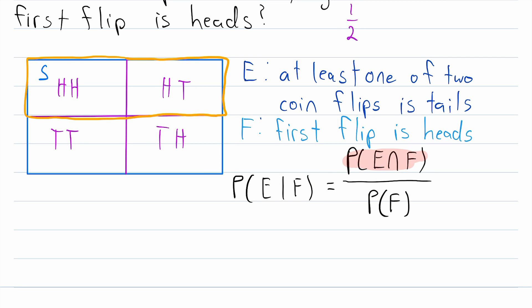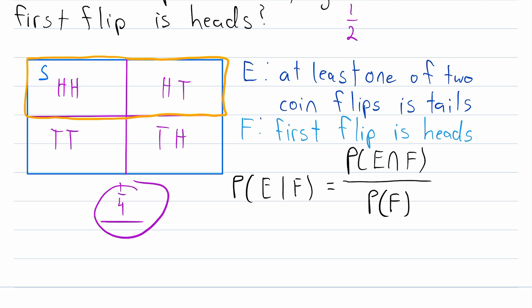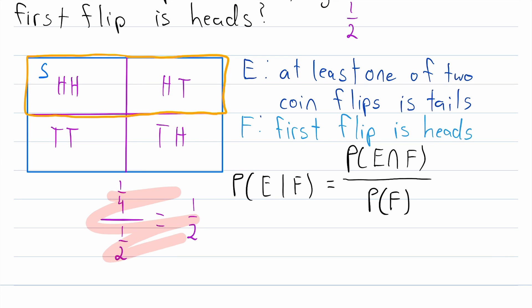Let's use the formula to verify our answer. The probability of E intersect F — the probability that at least one of two coin flips is tails and the first flip is heads — is one-fourth. So in the numerator we have 1/4. We divide by the probability of F, the probability that the first flip is heads, which is one-half, because two of the four equally likely outcomes have heads first. So 1/4 divided by 1/2 equals one-half, confirming our answer.